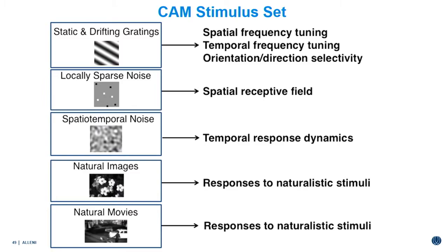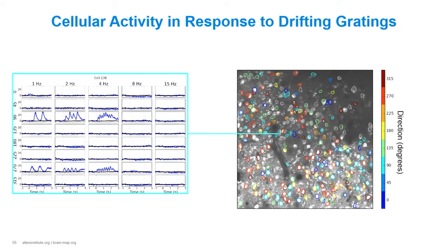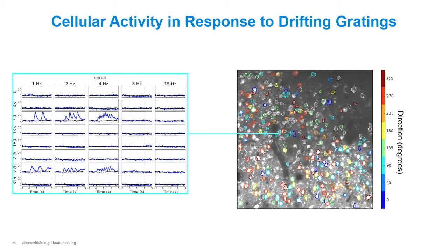Here is a dataset of activity in response to drifting gratings. Cells are colored according to their preferred direction, and neighboring cells show diverse direction preferences. An individual cell's activity shows it is highly selective to 90 and 270 degrees and doesn't respond to anything over 4 Hz. Similarly, the activity of each neuron in the final data product will be measured in response to the entire CAM stimulus set. Next, Derek will talk about the tools engineering has created to support the CAM pipeline.